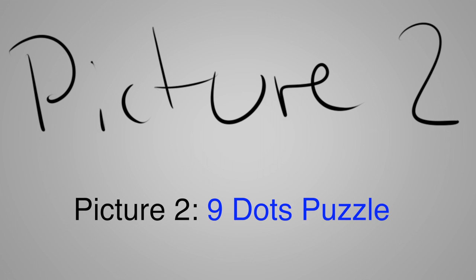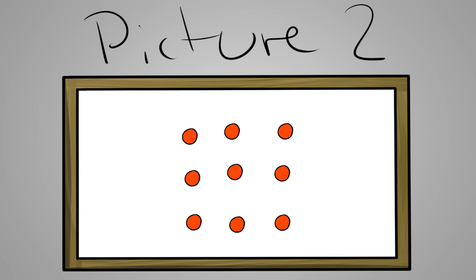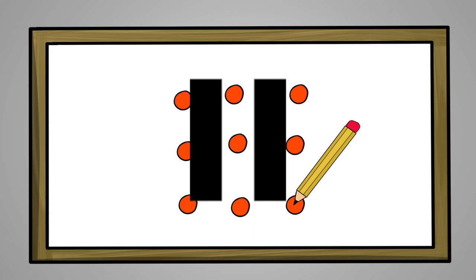The next riddle is a very classic one that some of you might know. It's about finding a way to connect all those 9 points with 4 straight lines without lifting up the pencil. Pause now to keep thinking.